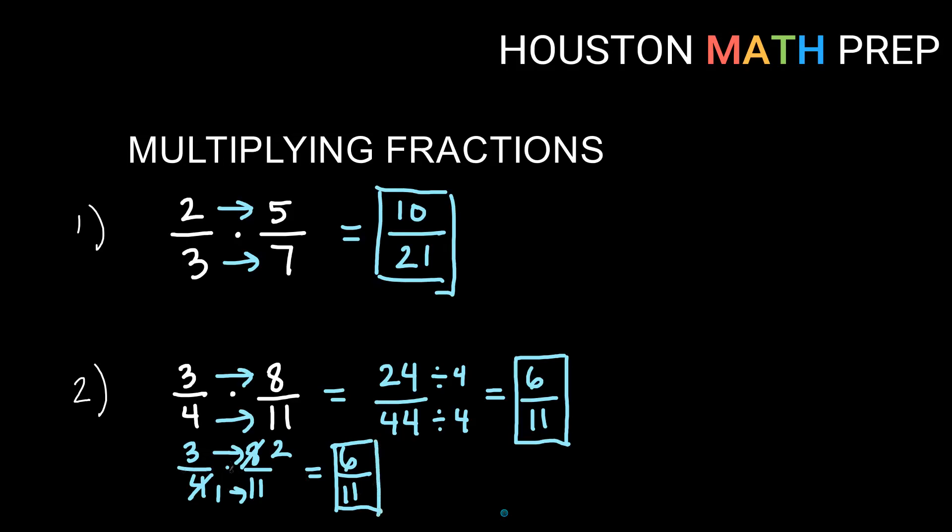So you can either reduce before you do the multiply, or you can reduce after you do the multiply. Really up to you, I would say just kind of stick with whatever seems to work for you best. If you want to keep smaller numbers, you might consider reducing early in the problem instead of trying to reduce large things at the end.